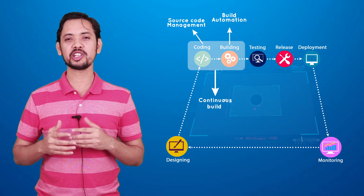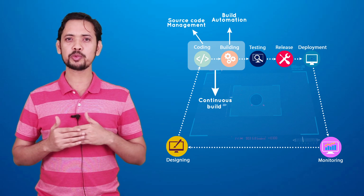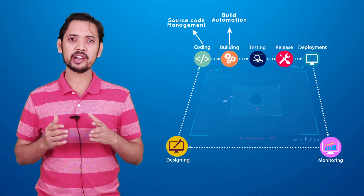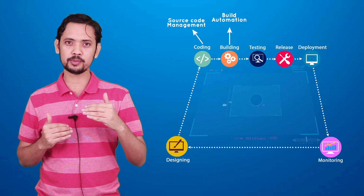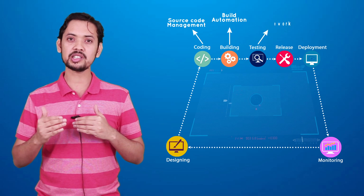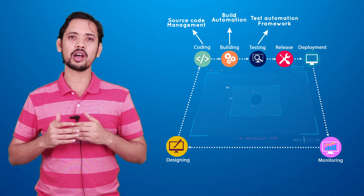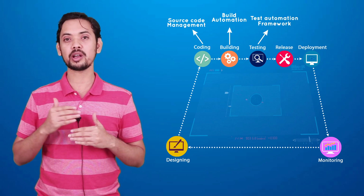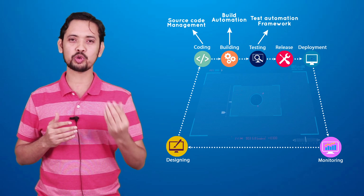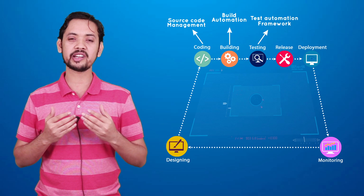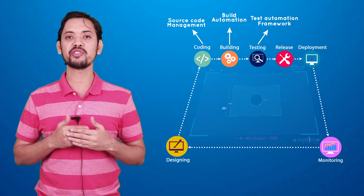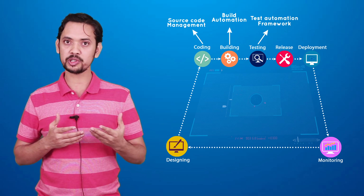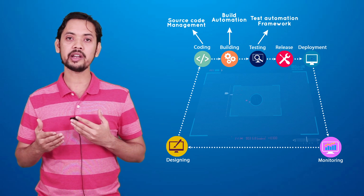If you are doing this pretty often, that can be called continuous build. For continuous testing, the developer pushes code and the tester pushes test cases into a common repository. As soon as new code or a new test case arrives, it triggers the test automation framework and a test report gets generated. If this process happens multiple times a day automatically, we can call it continuous testing.